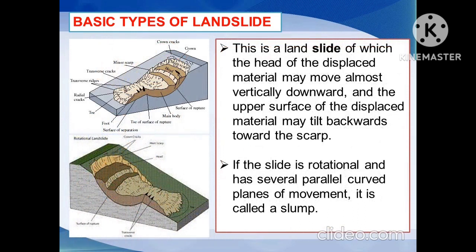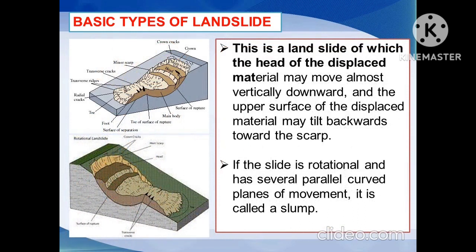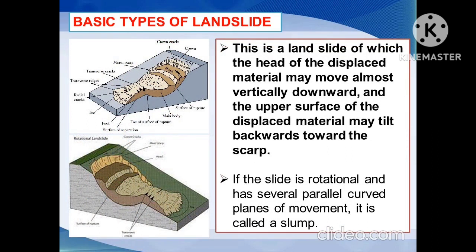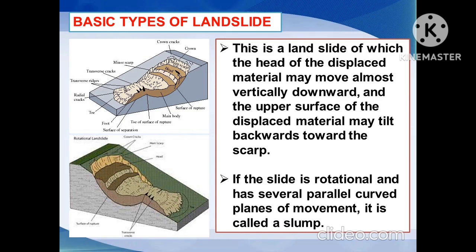Another type of landslide is the slide. This is the landslide in which the head of the displaced material may move almost vertically downward and the upper surface of the displaced material may tilt backward toward the scarp. If the slide is rotational and has several parallel curved planes of movement, it is called a slump.